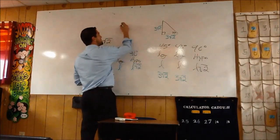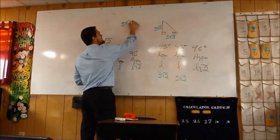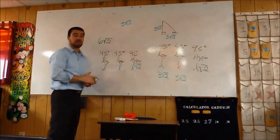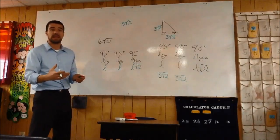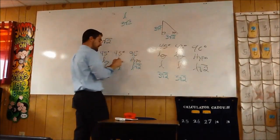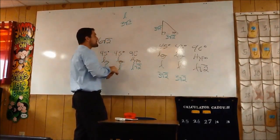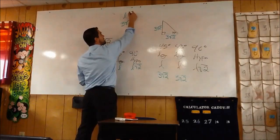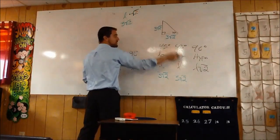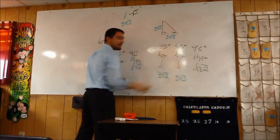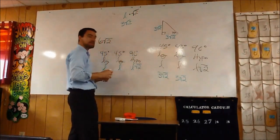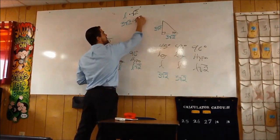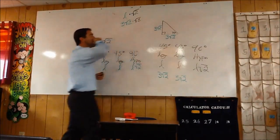I do not want to see your final answer on a test being 3 square root 2, which is the length of the leg. That's the leg. You need to take that value and multiply it by the square root of 2. That's how you get the hypotenuse's length — take the leg and multiply it by the square root of 2.